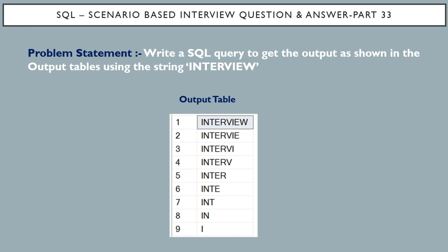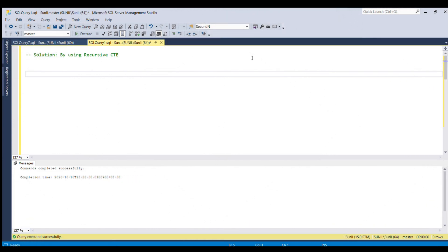The problem statement is: write a SQL query to get the output as shown in the output table using the string 'interview'. You have to take the string 'interview' as input and print the pattern as shown. You may be familiar with pattern-making questions in programming languages, but this pattern question in SQL is less common.